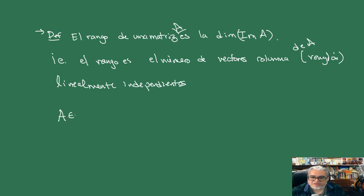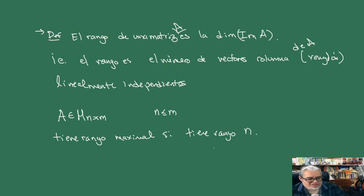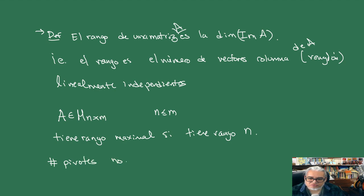Por ejemplo, una matriz N por M con N menor que M tiene rango maximal si tiene rango N. En el caso de matrices cuadradas, tiene rango maximal si es invertible. Por otro lado, esto también tiene que ver con el número de pivotes no nulos que tiene la matriz. Es decir, el rango es el número de pivotes no nulos.